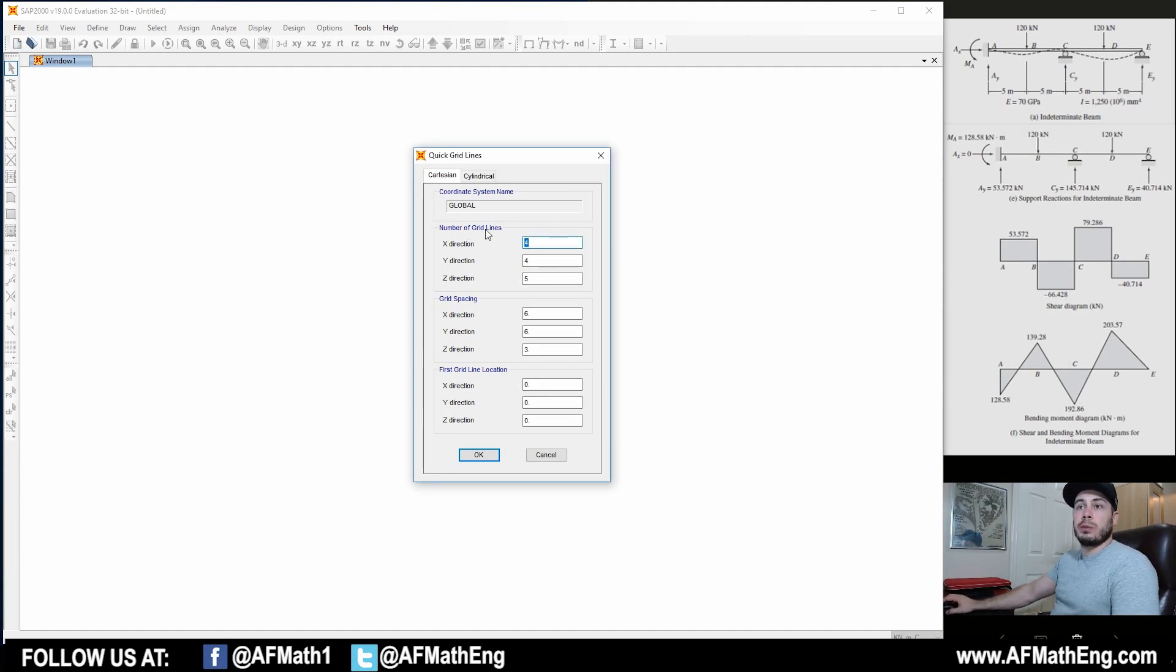What we're going to do is first define the number of grid lines that we want on our template here. We're going to want the number of grid lines where we have an input or a reaction or a force or something on our beam. If we count from the fixed support, we have 1, 2, 3, 4, 5 either supports or forces. So we want five grid lines there. The y and z direction in this problem aren't relevant because our beam is only in the x direction. For the spacing in the x direction, we have a five meter spacing. Press OK.